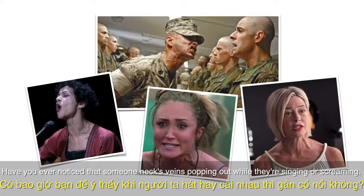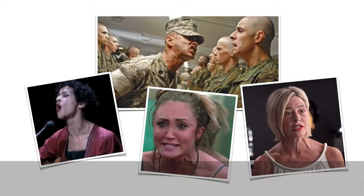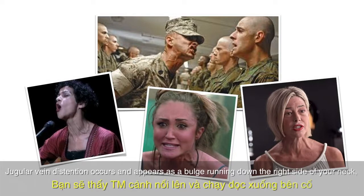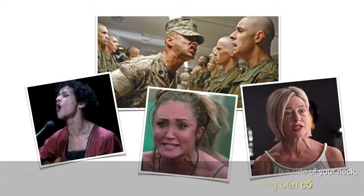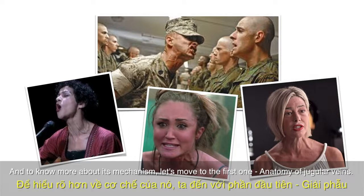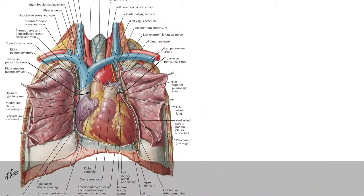Have you ever noticed that someone's neck veins popping out while they're singing or screaming? Those veins are jugular veins. So when the pressure inside your chest increases, jugular vein distension occurs and appears as a bulge running down the right side of your neck and more visible that you can see. And to know more about its mechanisms, let's move to the first one, anatomy of jugular veins.